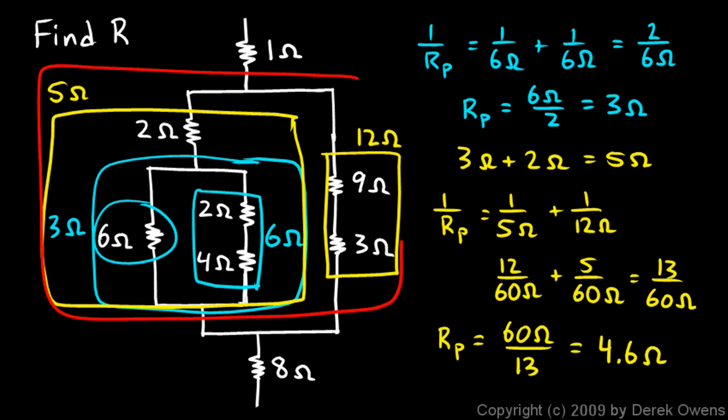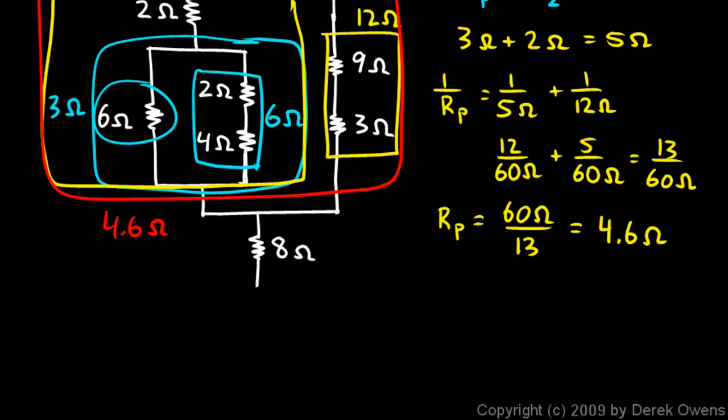this middle section here: 4.6 ohms. And then the answer from here is pretty trivial. I'm just going to add up the 1, my 4.6, and the 8. So my final answer will be R is 1 ohm plus 4.6 ohms plus 8 ohms, and you can do that in your head. 8 plus 4 is 12, plus the 0.6 is 12.6, plus the 1 is 13.6 ohms.